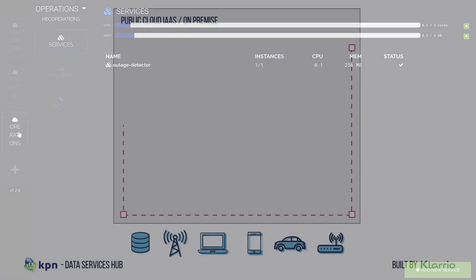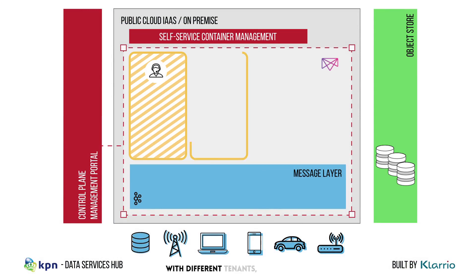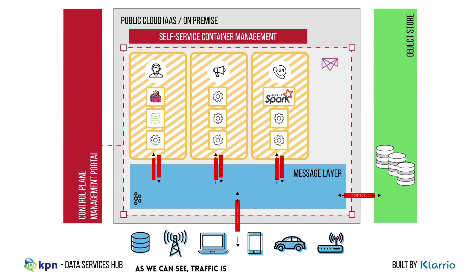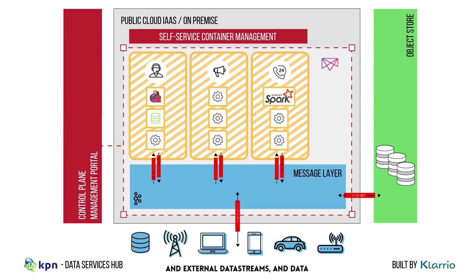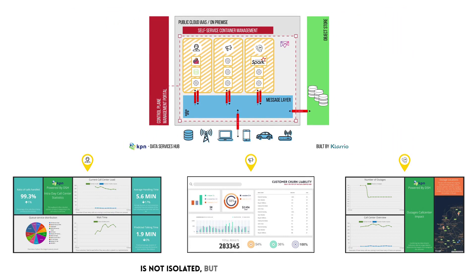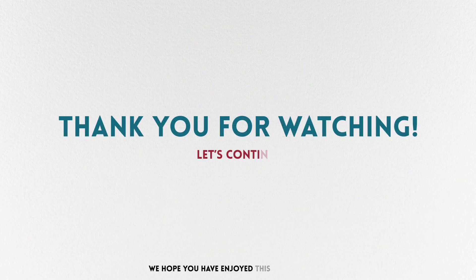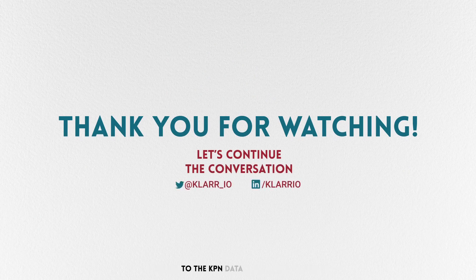Through this process, the DSH platform is populated with different tenants, data streams, and their respective containers, working together in secure harmony. As we can see, traffic is now flowing over internal and external data streams, and data is being sent to the object store. The data displayed by these tenants is not isolated, but shared on the message layer, ensuring that each tenant has a real-time view on the data that they need. We hope you have enjoyed this introduction to the KPN Data Services Hub.